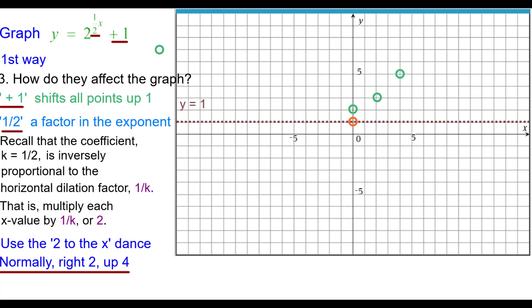Normally we go right 2 up 4. This time we're going to go right 4 up 4 doubling that 2. And right 3 up 8 is going to become right 6 up 8 doubling the 3. Going in the negative direction, normally we go to the left 1 up 1 half. This time we're going to go left 2 up 1 half. Left 2 up 1 quarter becomes left 4 up 1 quarter. And left 3 up 1 eighth becomes left 6 up 1 eighth.